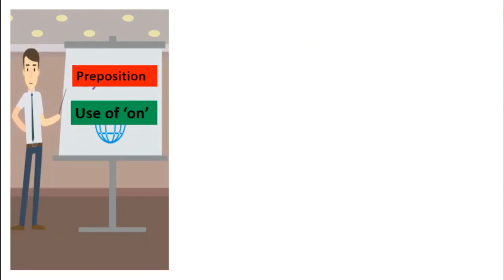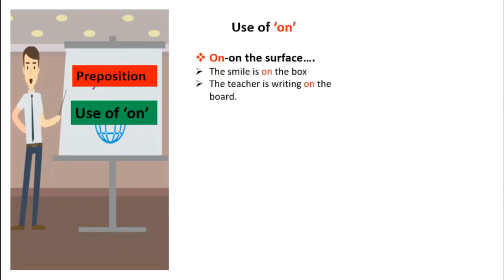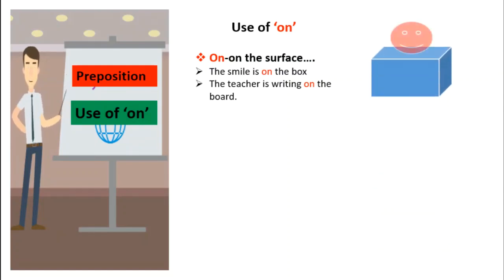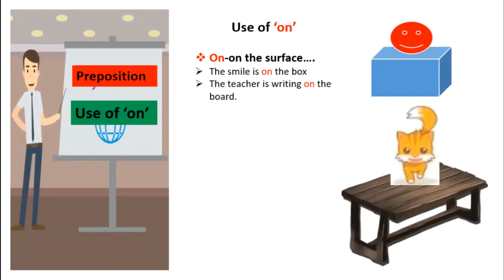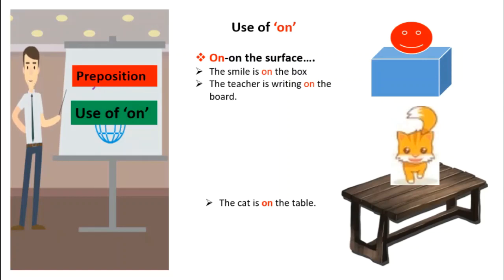Next, the use of 'on'. 'On' is used to mean on the surface of something. Like, the smiley is on the box. The teacher is writing on the board, and we can also say the cat is on the table. That means when we keep something on the surface of another thing, we use the preposition 'on'.